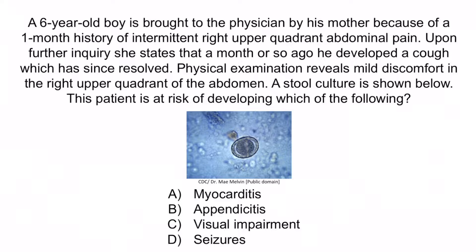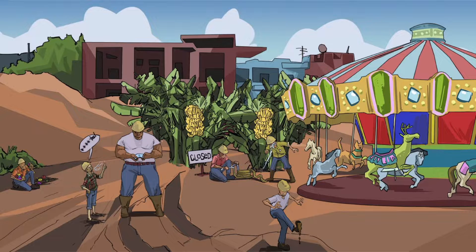The boy has a one-month history of intermittent right upper quadrant abdominal pain, which should immediately make you think of Ascaris lumbricoides. The only other parasite causing biliary problems you need to know for Step 1 is Clonorchis sinensis. He also had a cough a month ago, suggestive of Loeffler syndrome, which is unique to Ascaris lumbricoides, Strongyloides stercoralis, and hookworms. A stool culture shows a parasitic egg. Collectively, these features are diagnostic for Ascaris lumbricoides, so the correct answer is B — appendicitis. The parasite may cause obstruction at the ileocecal valve, which is in very close proximity to the appendix, resulting in intestinal obstruction and even appendicitis.